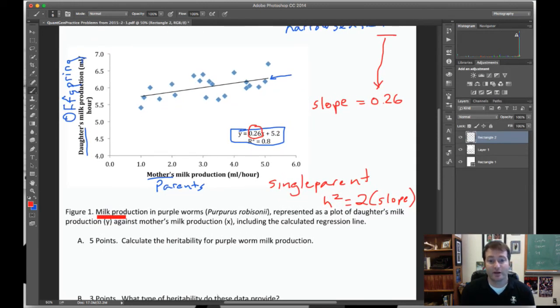Calculate the heritability for purple worm milk production. It's literally just get the slope and multiply it by 2 because it's a single parent. So heritability equals 2 times the slope, which is equal to 2 times 0.26, which is equal to 0.52. And again, our sanity check is heritability has to be between 0 and 1. That's the answer.